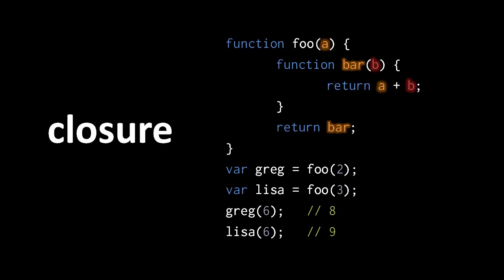Each closure has its own set of the variables of the enclosing functions. The variable a in one closure is not the same variable a as in the other. So when we invoke these two separate copies of bar with the argument 6, the copy stored in Greg returns 8 because 6 added to 2 is 8, but the copy stored in Lisa returns 9 because 6 added to 3 is 9.